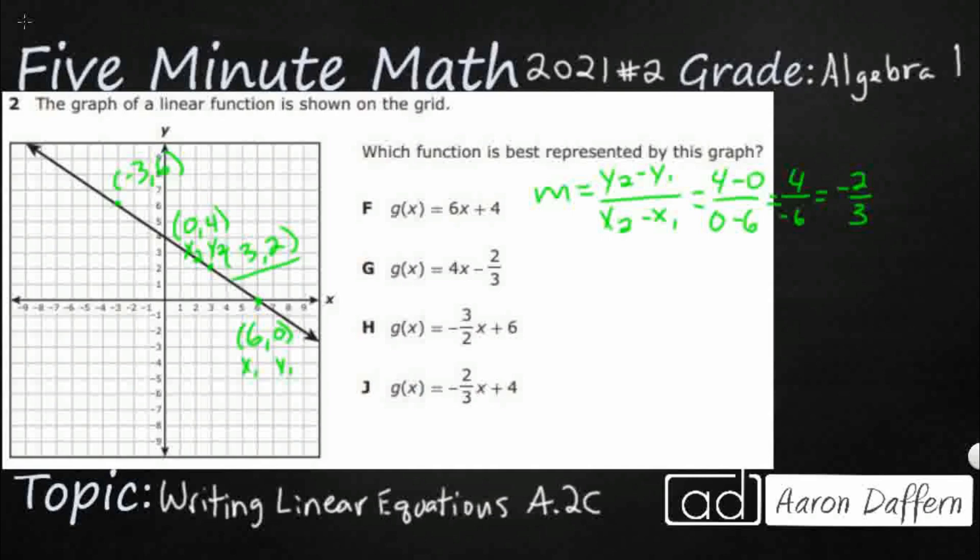Could have done that with that right there. All right. If I made this my x2 and my y2, made this my x1 and my y1, would have been the same thing. It would have been two minus six over three minus negative three, right?